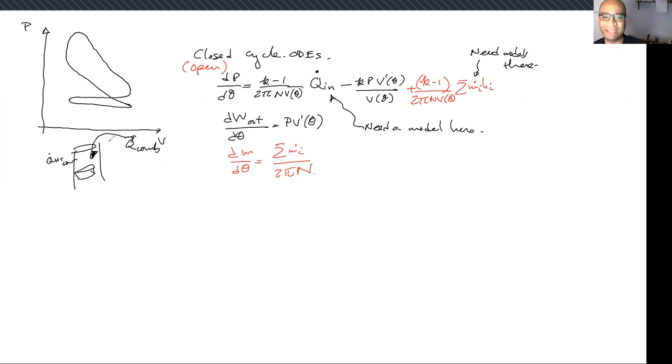And I can have some Q_dot here, I'm going to draw it as coming from nowhere. This is Q_dot_combustion, the rate at which heat is added.